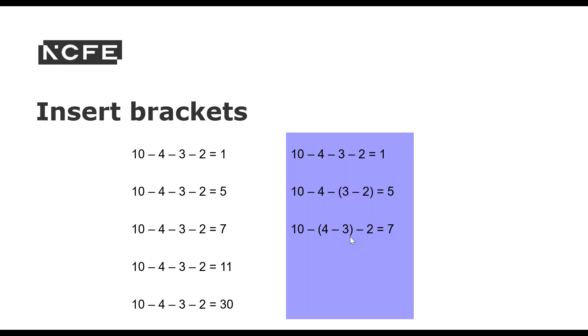Here, we've got brackets. So 4 take away 3 is 1. 1 take away 2 is minus 1. 10 take away minus 1 is the same as plus 1. So we've got 11.